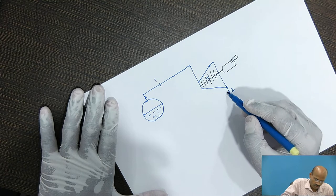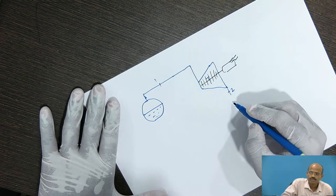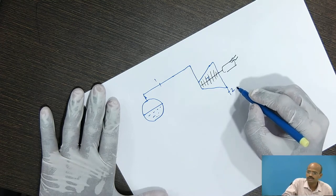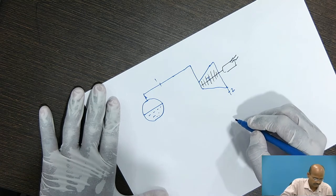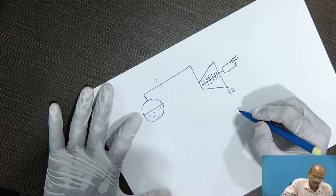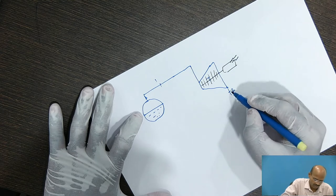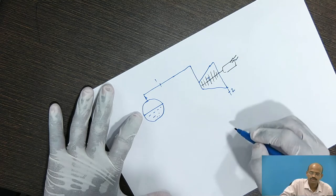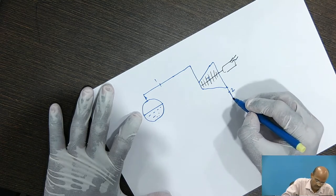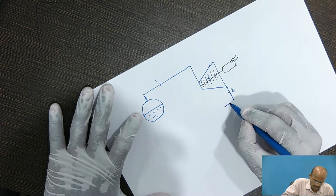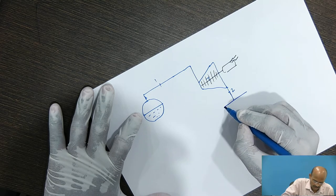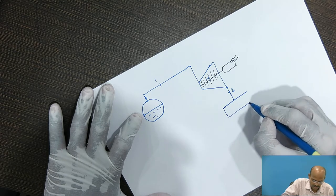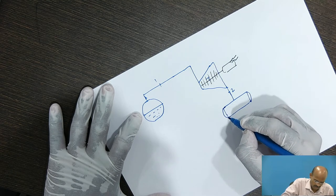At the outlet of the turbine, the steam will be either dry saturated or wet steam. As the Rankine Cycle is closed, this steam is to be converted into water. So, what we will do? We will pass this either wet steam or the dry saturated steam through the condenser.